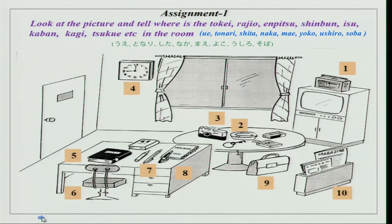Let us see. You have words like ue, shita, tonari, yoko, naka, ushiro, mae — these words you had done. So this is what we are going to practice over here.